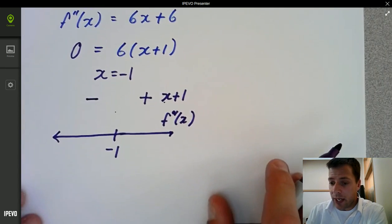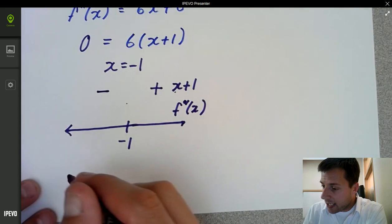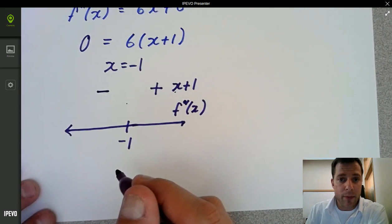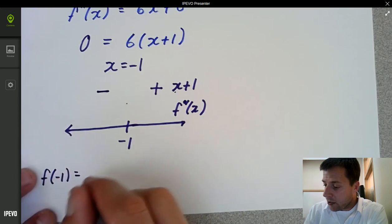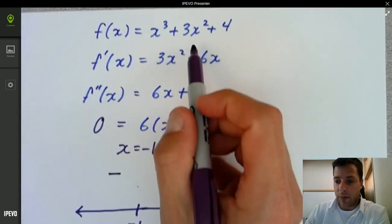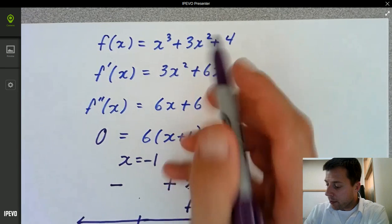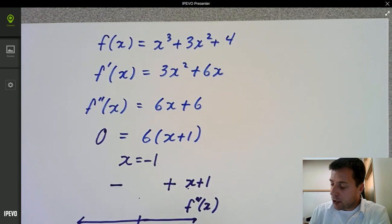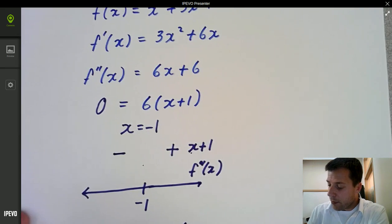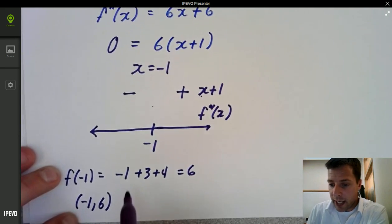That's exactly what we wanted. So we know that negative 1 is going to be a point of inflection. It actually occurs that if we plug in negative 1, you get negative 1, if you go back to the original, negative 1 plus 3 plus 4, so 6.